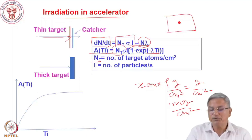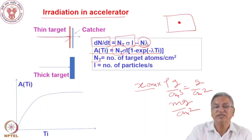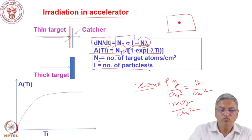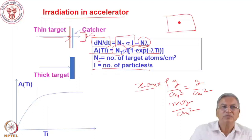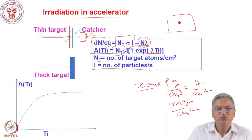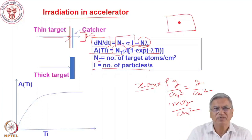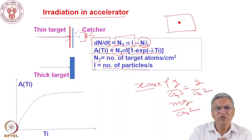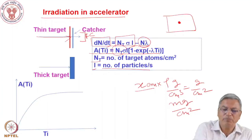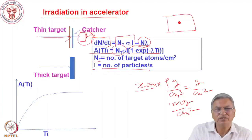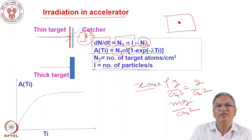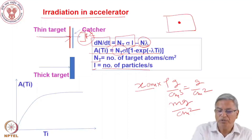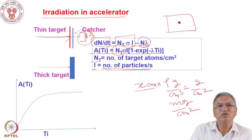N_t here is the number of target atoms per centimeter square, which you get from the thickness. I is the beam intensity — number of particles per second. You place a Faraday cup after the target; the charged particles induce reactions and continue with lower energy to be collected in the Faraday cup. You measure the integrated charge and divide by time to get particles per second. The beam current will be in nanoampere, microampere, or milliampere. For thick targets where the projectile stops, you determine the current directly from the Faraday cup.